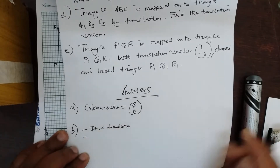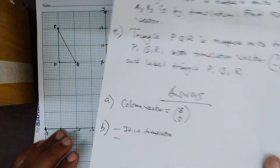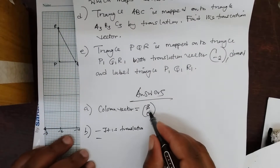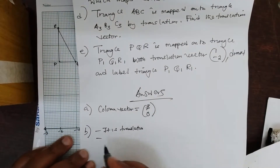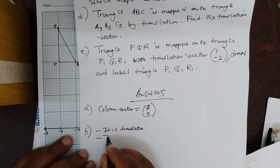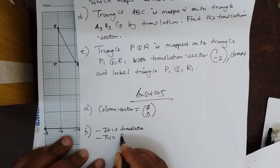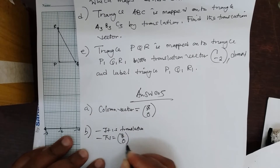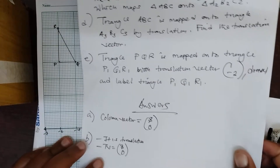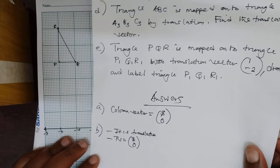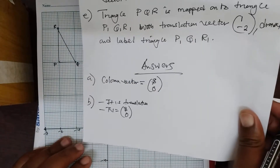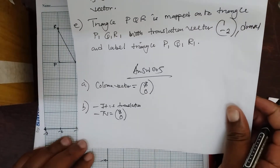Then give it a translation vector. What is the translation vector? We have already found it. So we say translation vector, or column vector, is 8 and 0. That one is done.